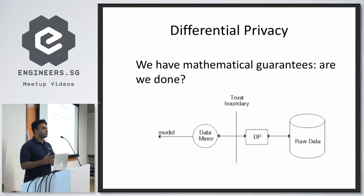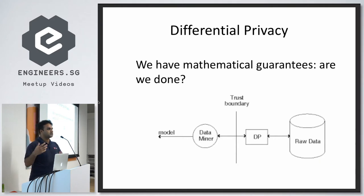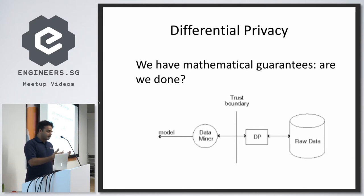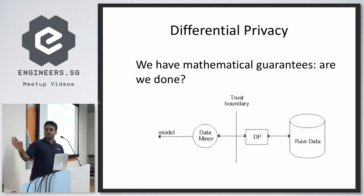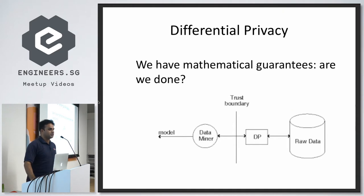The biggest issue with differential privacy is that you end up creating a trust boundary. You have raw data and an analyst who issues her query, which gets transformed by a differential privacy transformer and then run on the actual database. Everything to the right of that trust boundary is still insecure and sensitive — if you lose that, you're in trouble.